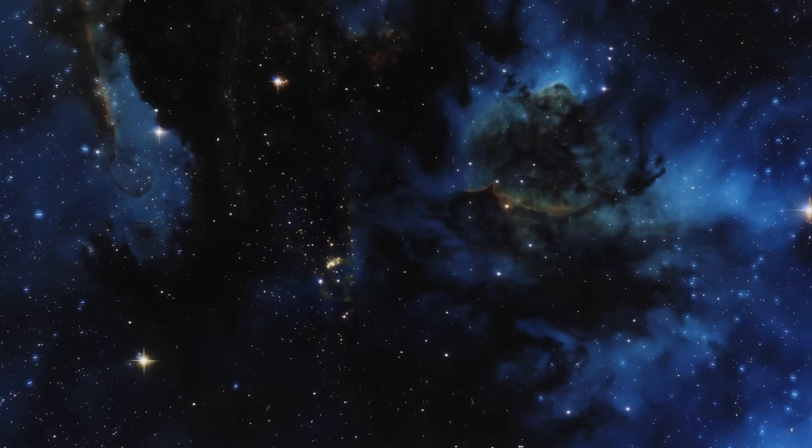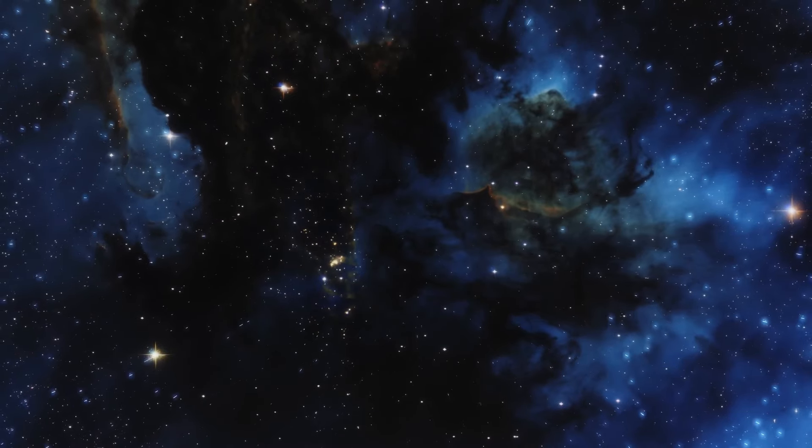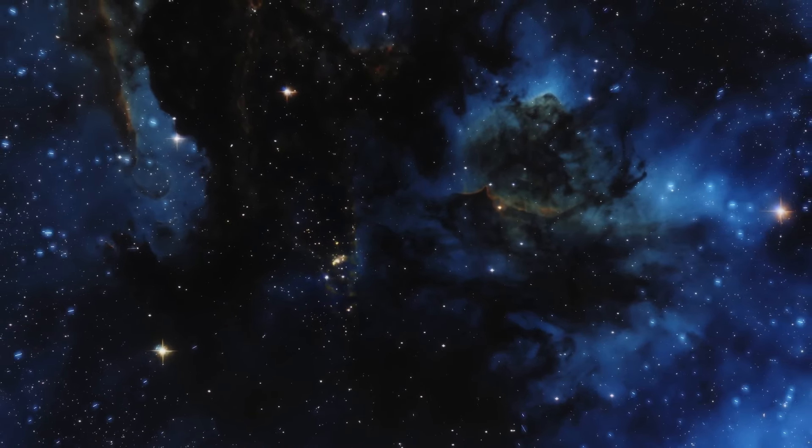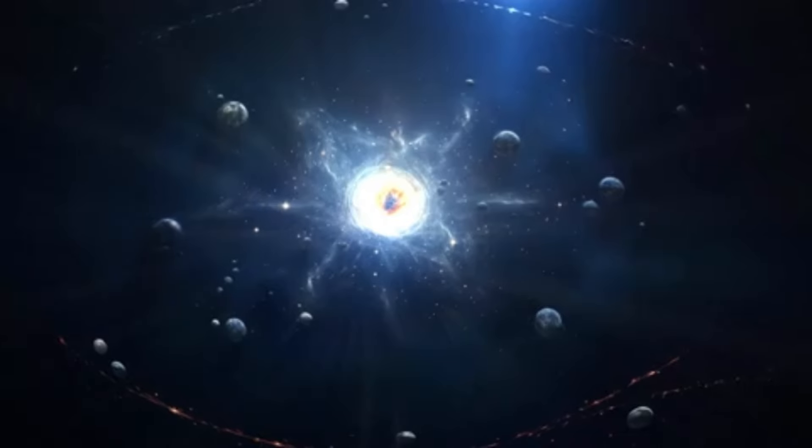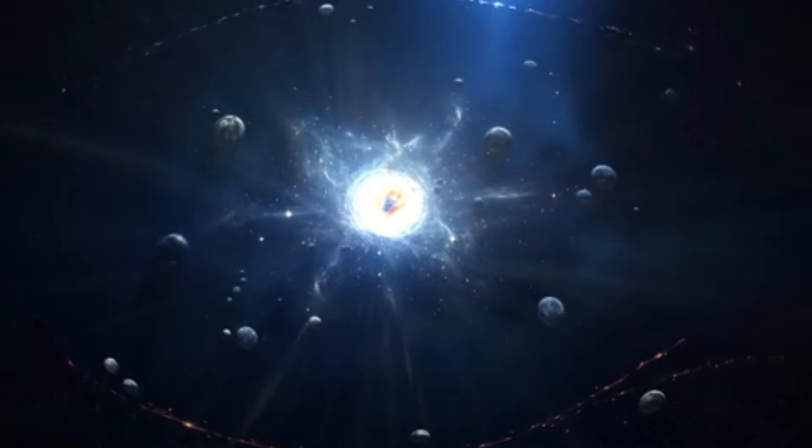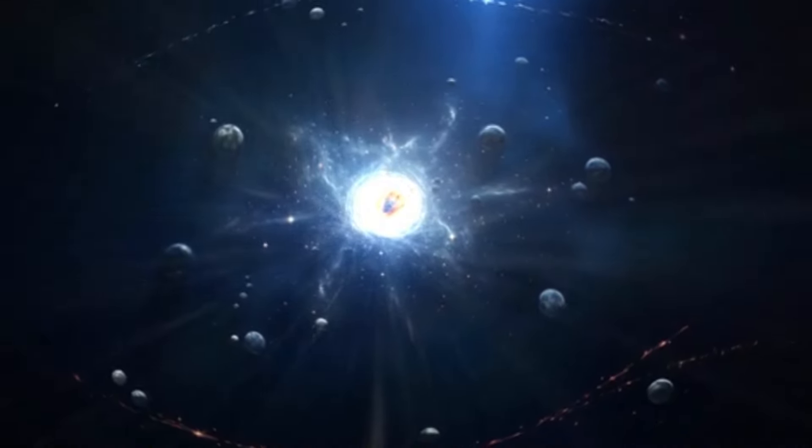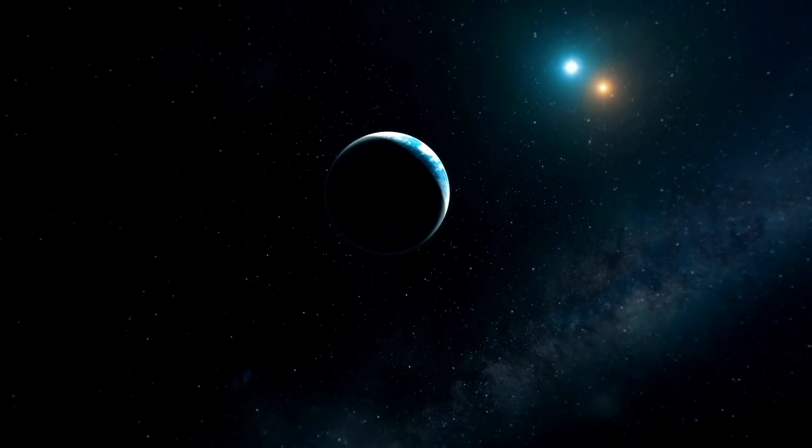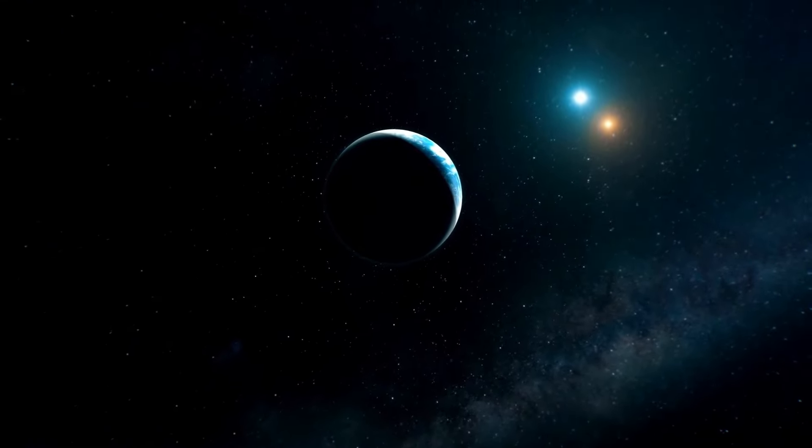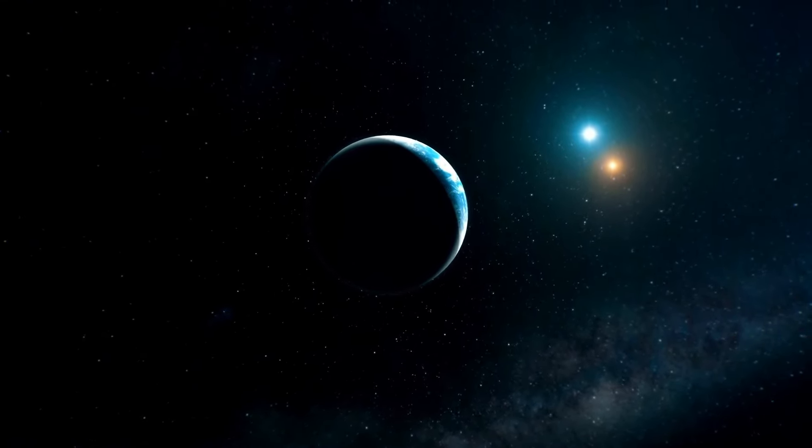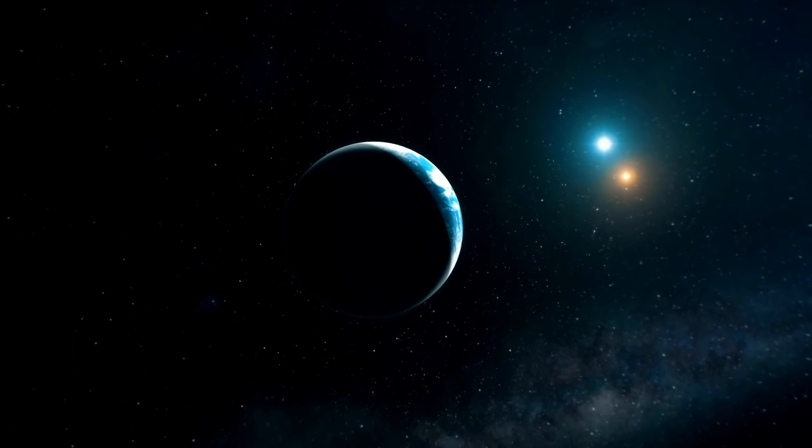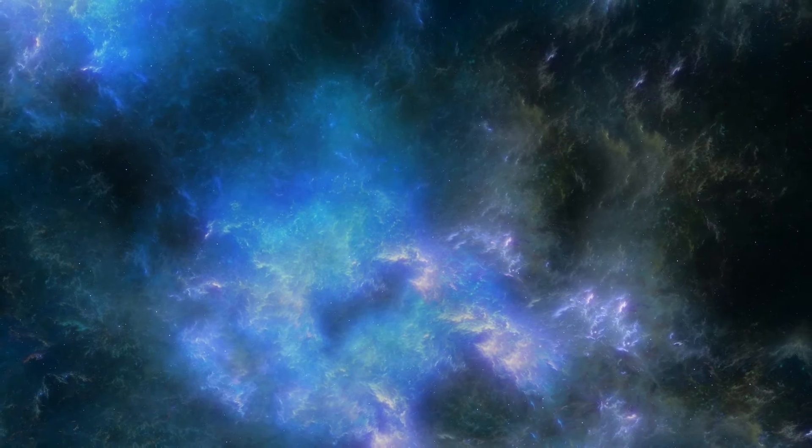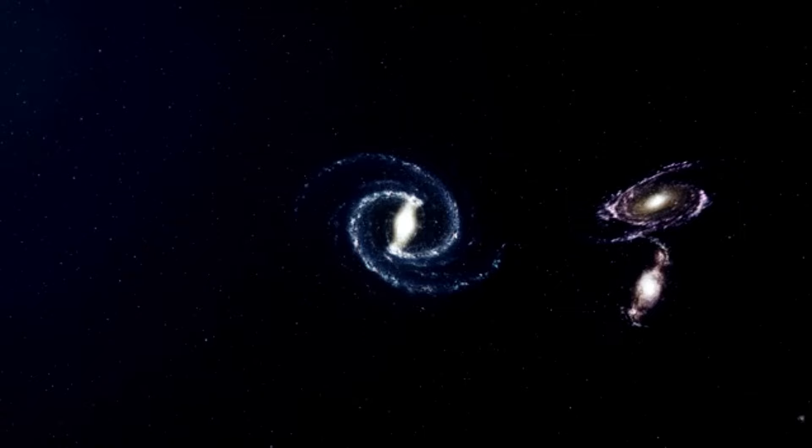In addition to studying Betelgeuse's behavior, researchers are also investigating the potential impact of its supernova on nearby celestial bodies. The Milky Way is teeming with stars, many of which could experience gravitational or radiation effects from a nearby supernova event. While Betelgeuse is situated at a safe distance of approximately 650 light-years, its explosion could still influence the formation of new stars and planetary systems in the vicinity. This cosmic interplay of forces highlights the interconnected nature of stellar evolution and the broader dynamics of the galaxy.